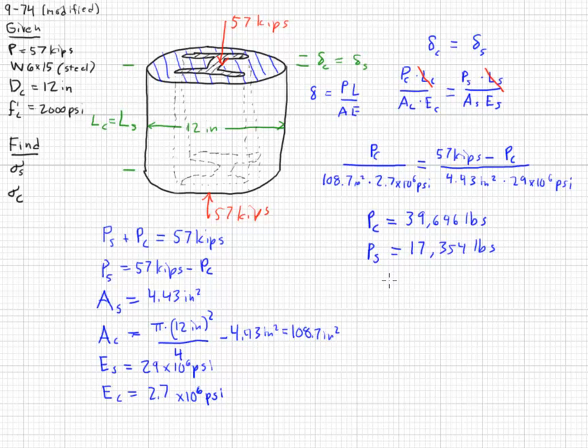We use our normal stress equation. Normal stress equals force over the area. And we use our areas here and here. Stress of the concrete is 365 psi. And stress on the steel is 3,917 psi. Note that the load on the concrete is much greater than the load on the steel. But the stress on the steel is much greater than the stress on the concrete, primarily due to its much smaller area.